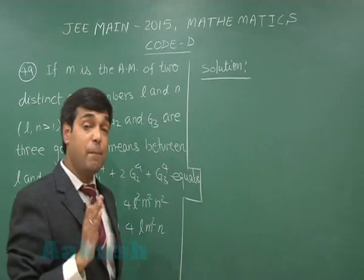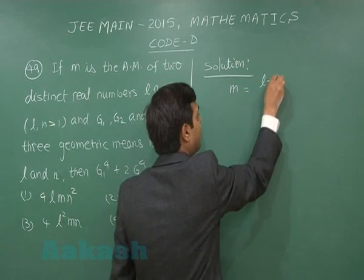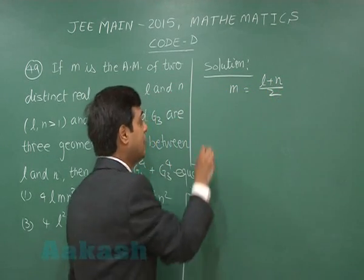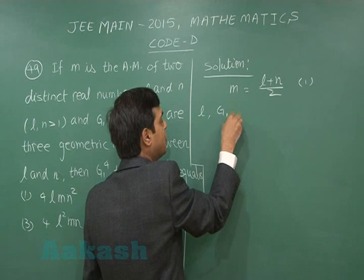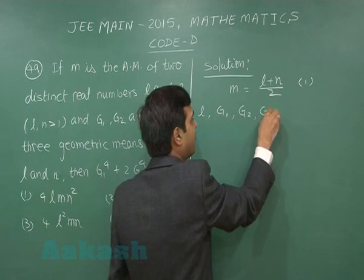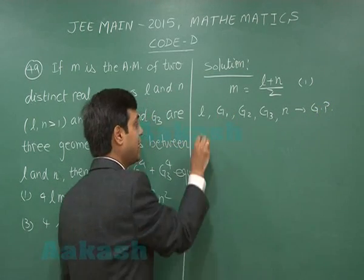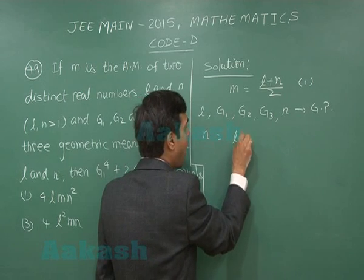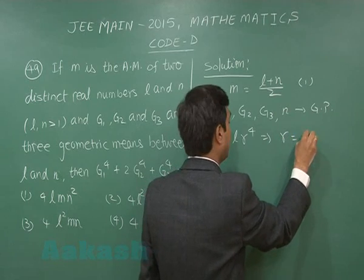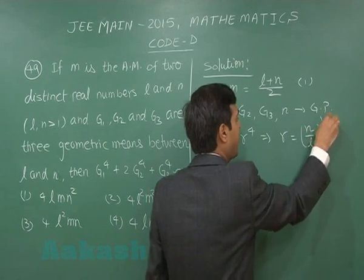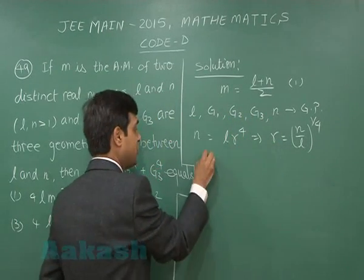M is the arithmetic mean of L and N, so M = (L+N)/2. G1, G2, G3 are three geometric means, so L, G1, G2, G3, N are in GP. N is the fifth term, so we can say N = L·r⁴, where r is the common ratio, giving r = (N/L)^(1/4).